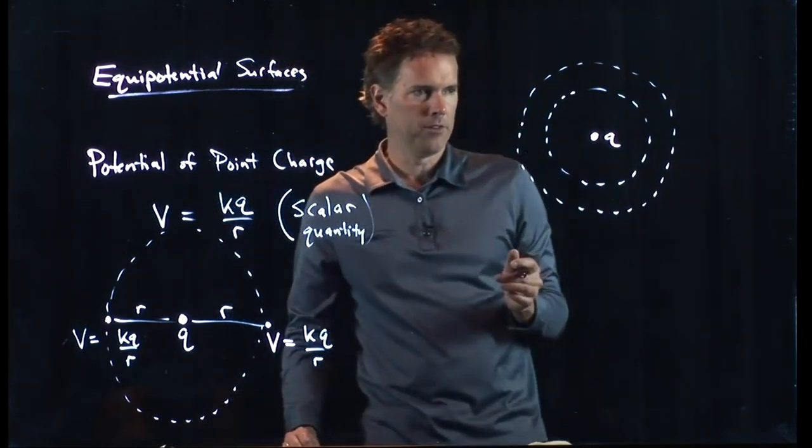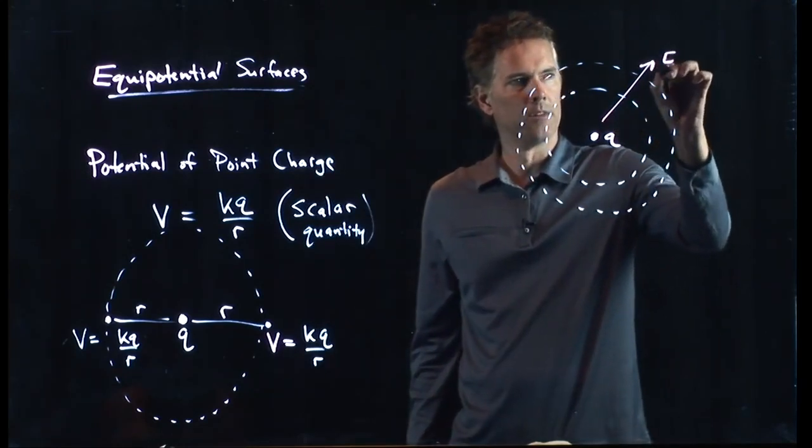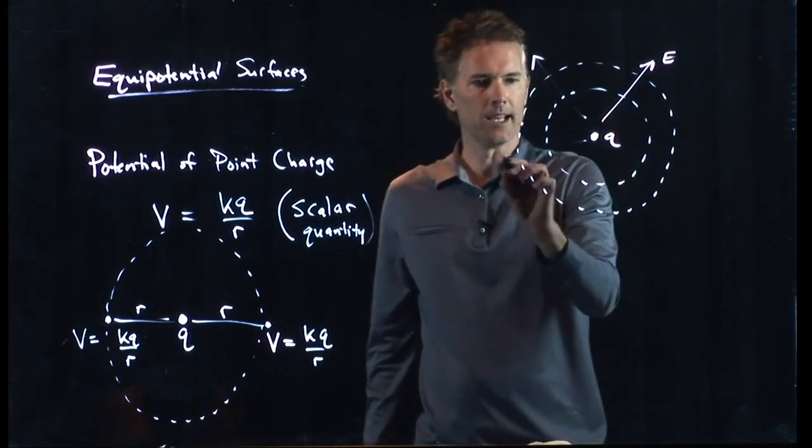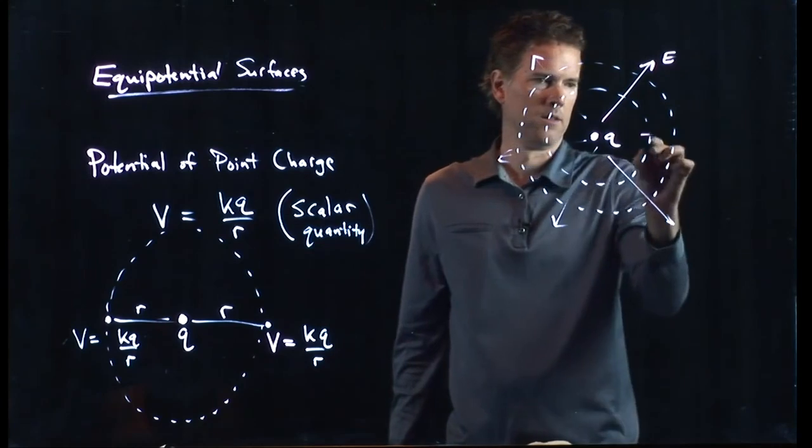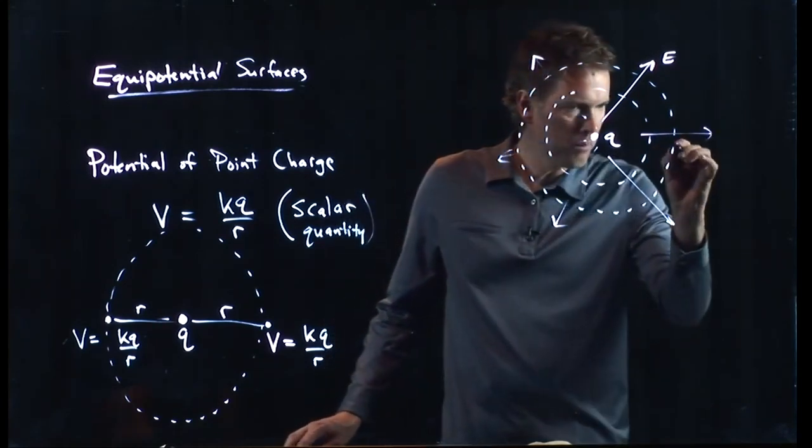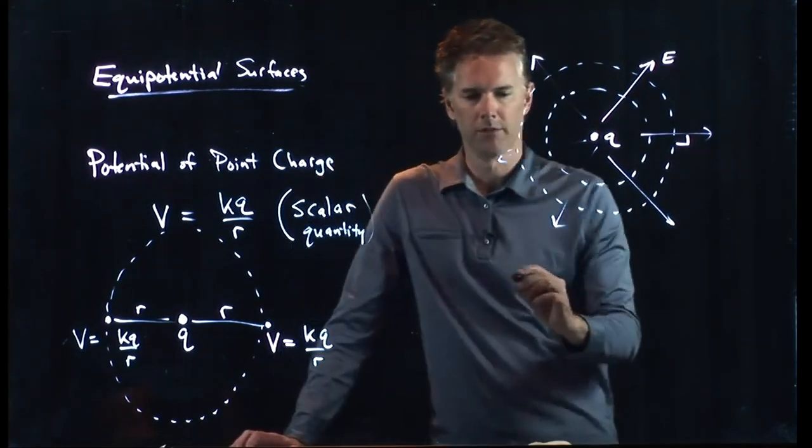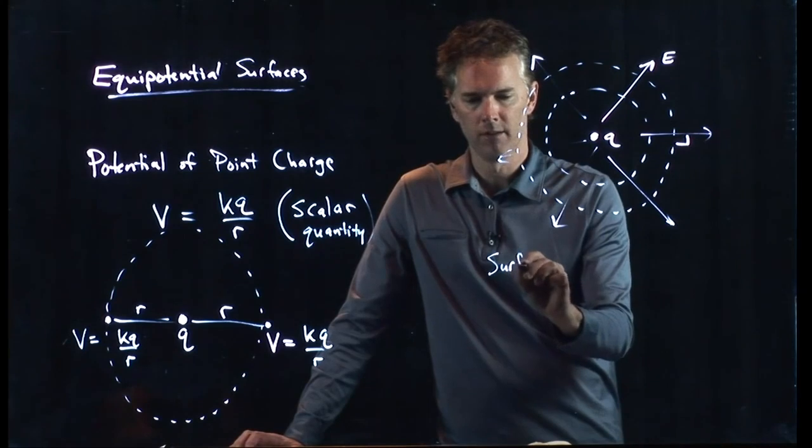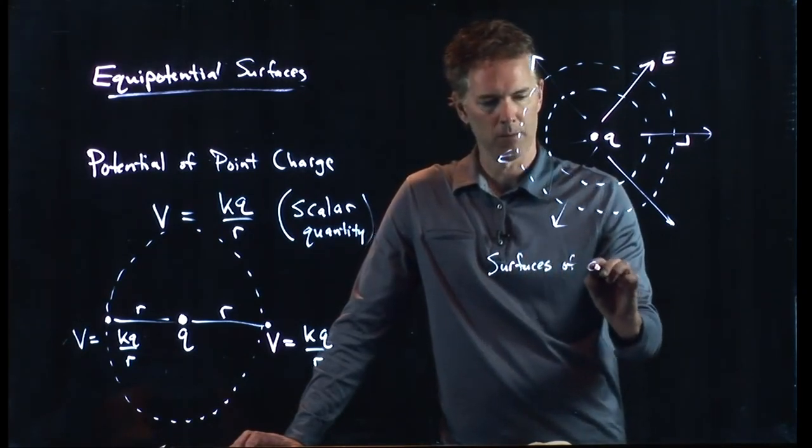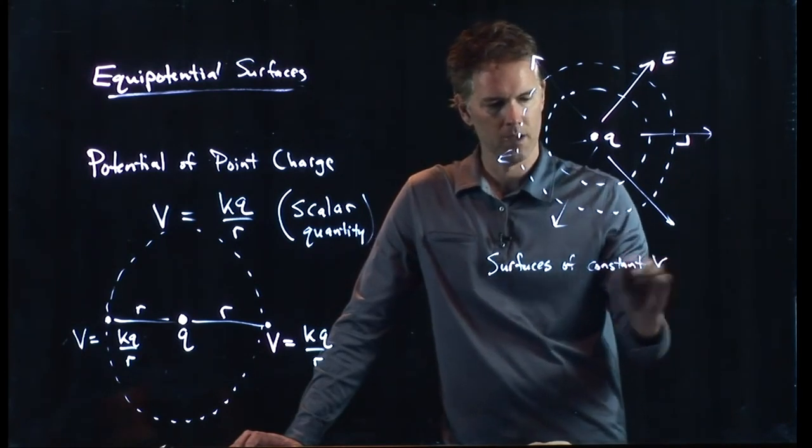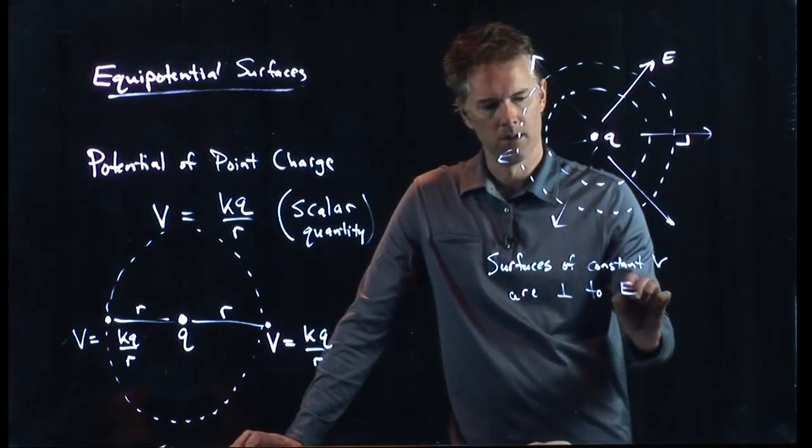The E field, of course, is always perpendicular to those. We know that E goes radially outward. And so the E field is always perpendicular to the equipotential surface. Surfaces of constant V, that's what an equipotential surface is, are always perpendicular to E.